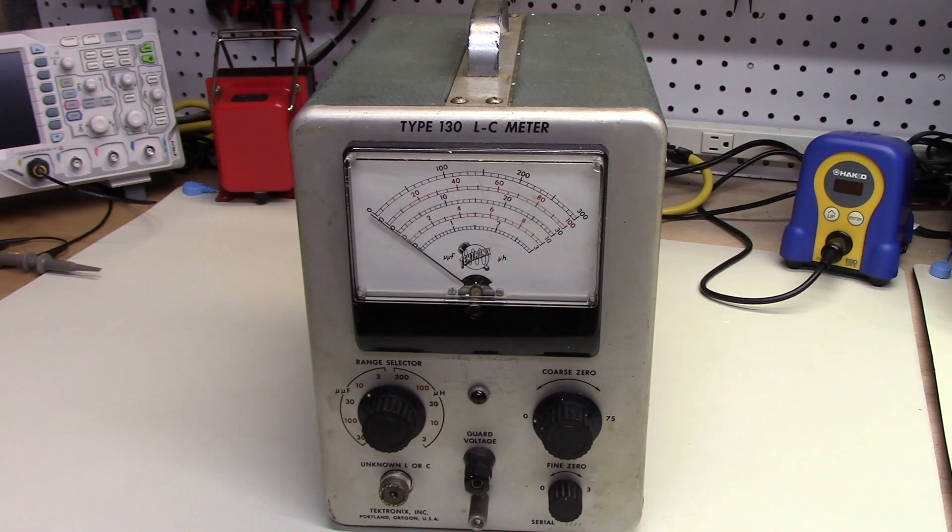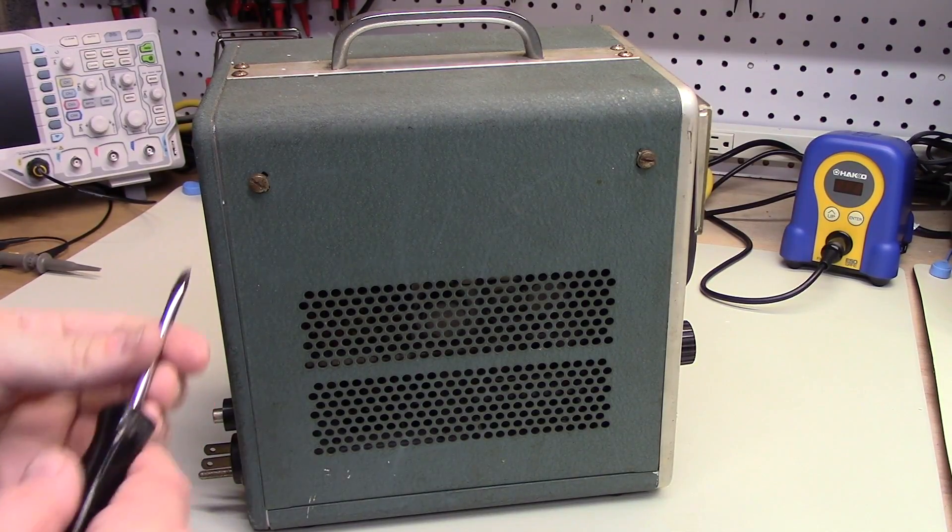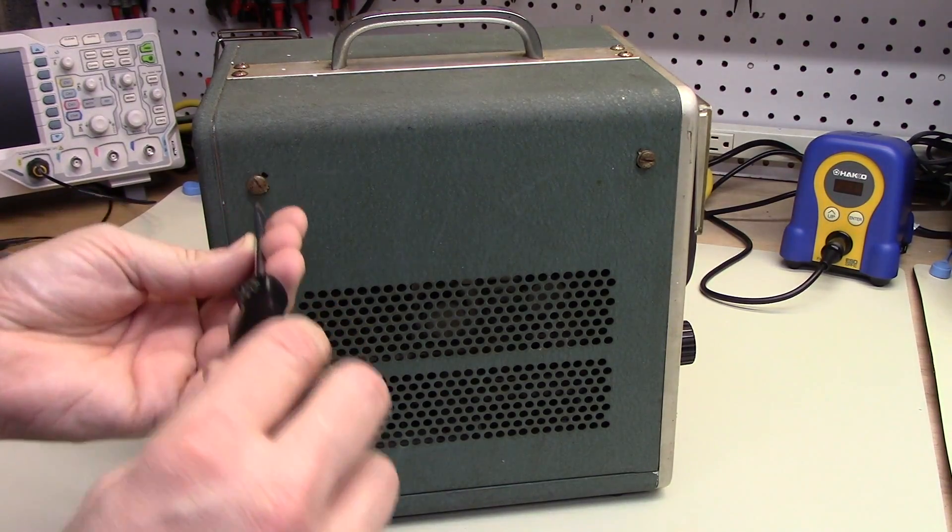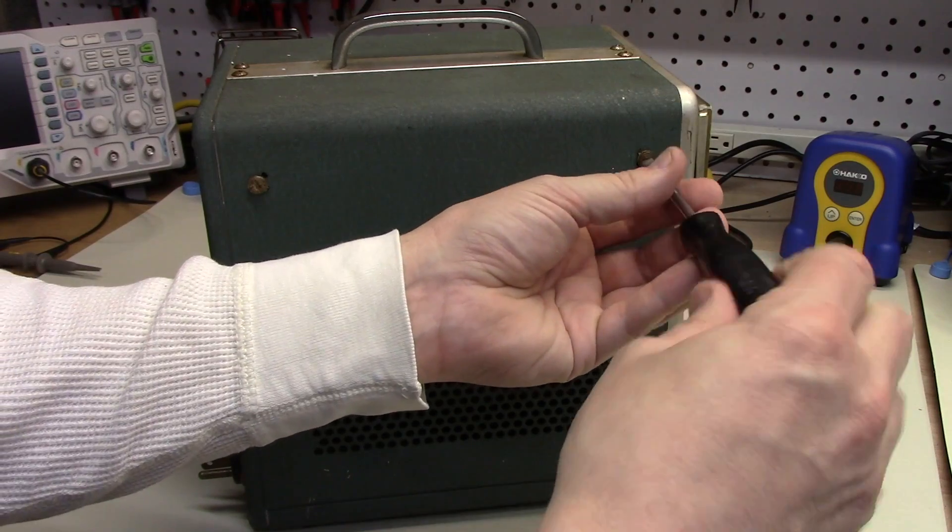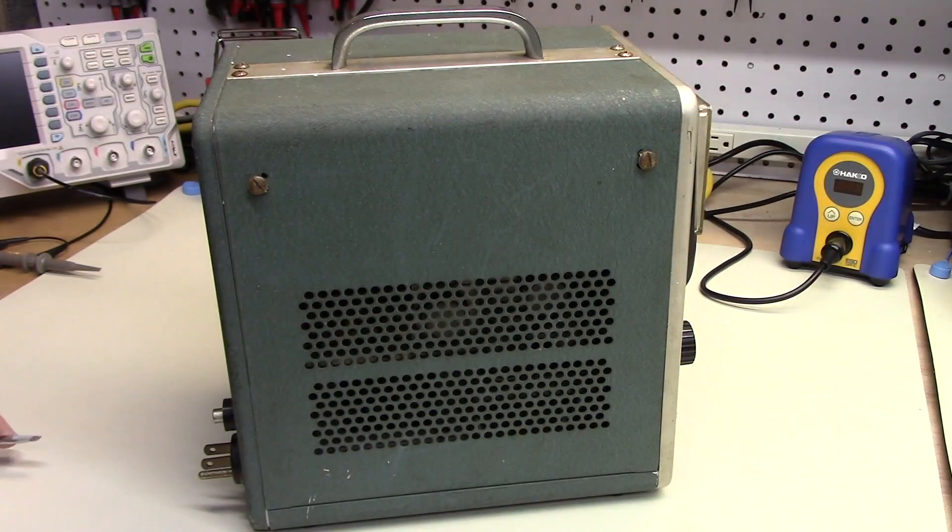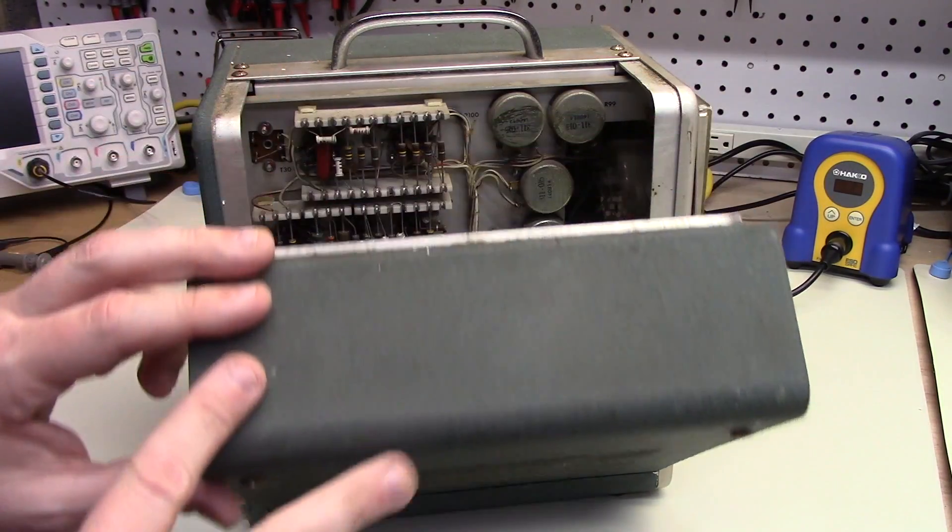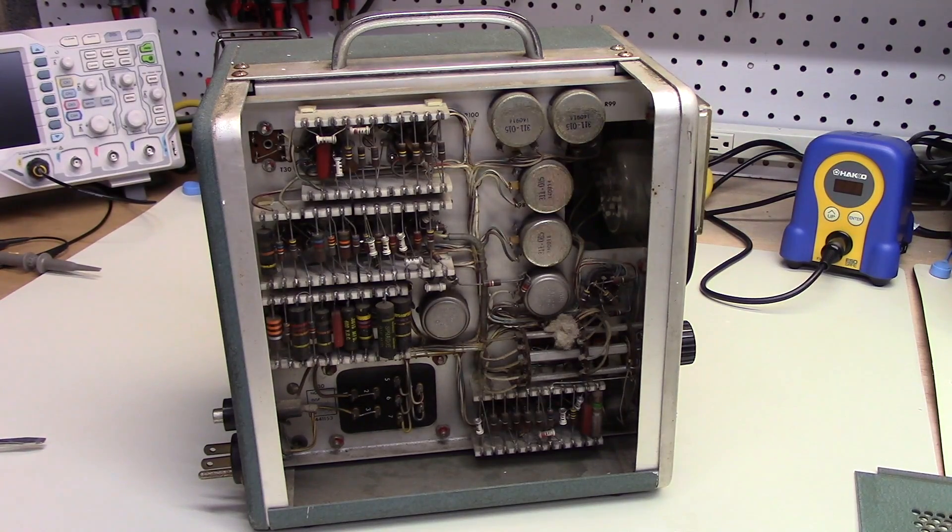Alright. Well, I'll open it up here in just a moment and look inside. The way that these old Tektronix chassis open is just a simple twist of two screws here on the side. And this then comes out and goes completely off.